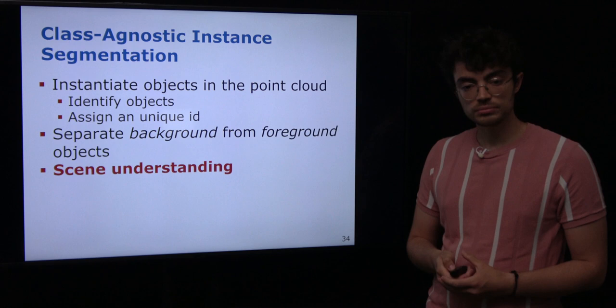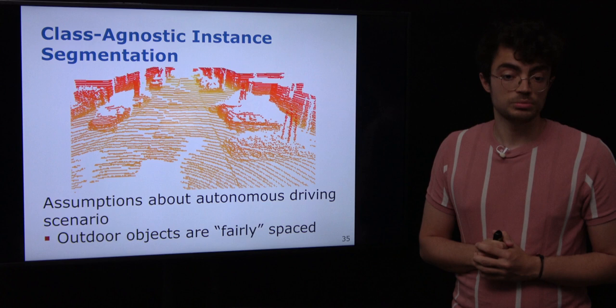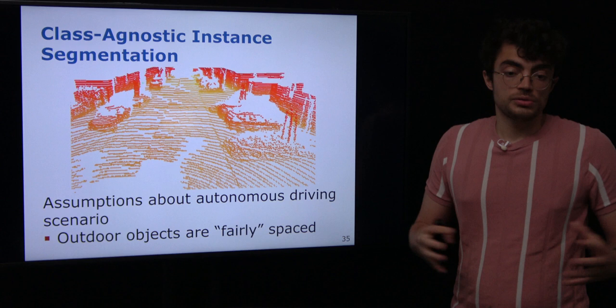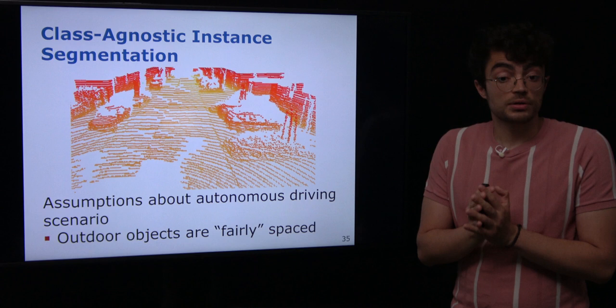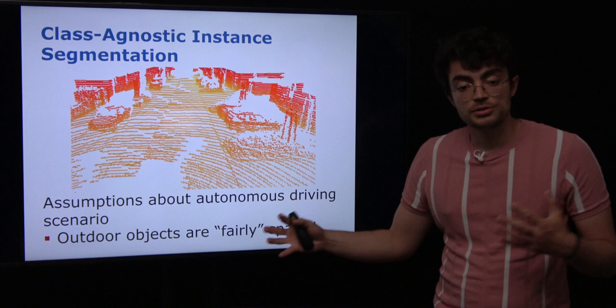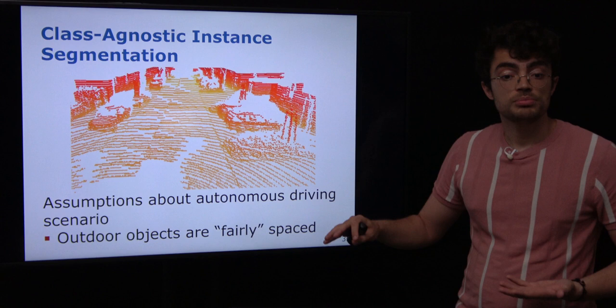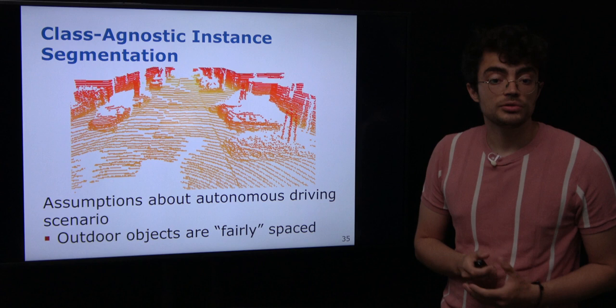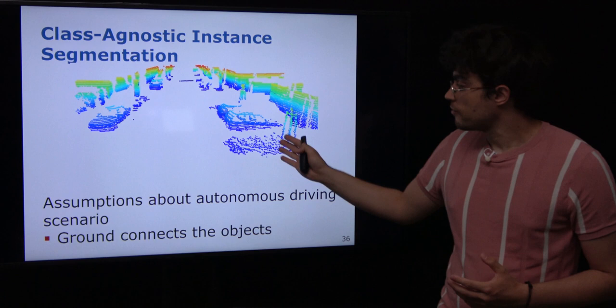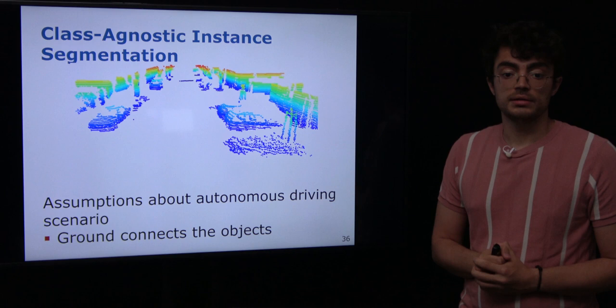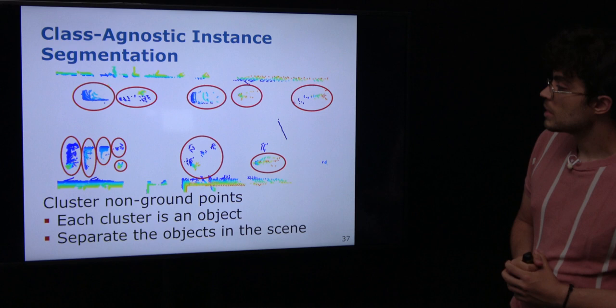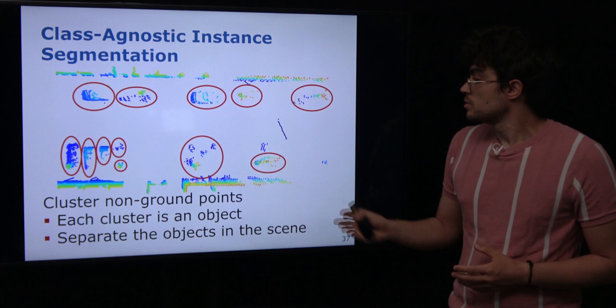How can we do that? We can take some assumptions about the autonomous driving scenario. We are in an outdoor environment where objects are generally not super crowded — parked cars or cars driving around should not be touching each other. Also, in outdoor environments there is no ceiling, so the main connection between all structures is the ground. But now that we know how to extract and remove the ground, we can see that different objects in the scene are well separated from each other. From a top view, individual objects are easily distinguished from each other.